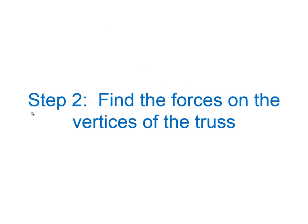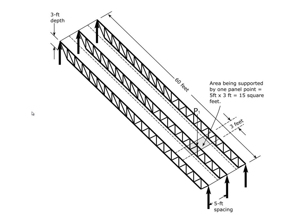The second step is to find the forces on the vertices of the truss. We're going to assume the spacing of the trusses is five feet and the dimension from one node to the next is three feet. Each node is supporting halfway to the next truss on each side and halfway to the adjacent nodes, so the area of floor associated with each vertex is three feet by five feet, or fifteen square feet per vertex.